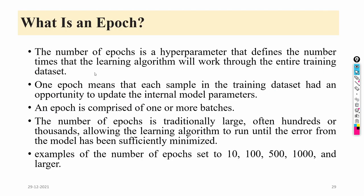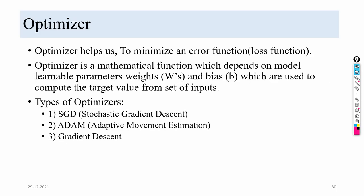The number of epochs is the hyperparameter that defines how many times the algorithm trains through the entire training dataset. One epoch means each sample in the training dataset has an opportunity to update the parameters. An epoch is composed of one or more batches. The number of epochs should be chosen based on your dataset size and hardware.